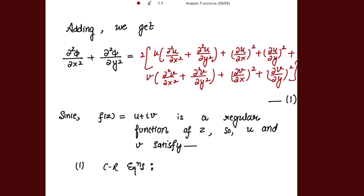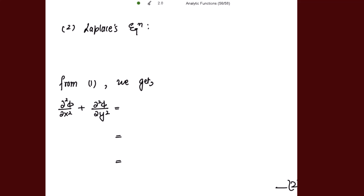Now since f(z) = u + iv is a regular (analytic) function of z, u and v satisfy both the CR equations and Laplace's equations. The CR equations are: ∂u/∂x = ∂v/∂y and ∂v/∂x = −∂u/∂y. And from Laplace's equations: ∂²u/∂x² + ∂²u/∂y² = 0, and ∂²v/∂x² + ∂²v/∂y² = 0.